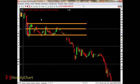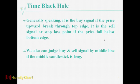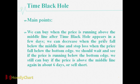The top line, the middle line, and the bottom line all have support and resistance. It is the buy signal if the price upward breaks through the top line. It is the sell signal or stop-loss point if the price falls below the bottom line. We can also judge buy or sell signals by the middle line. We can buy when the price is running above the middle line after Time Black Hole appears. We can reduce positions when the price falls below the middle line, and stop loss when the price falls below the bottom line. We should wait and see if the price is running below the bottom line.